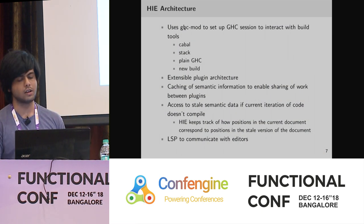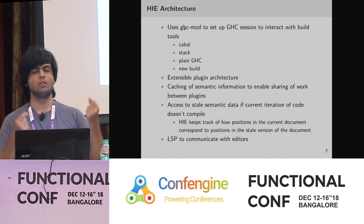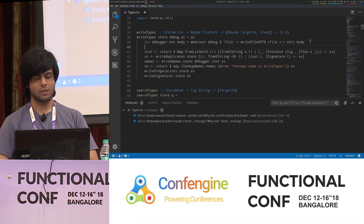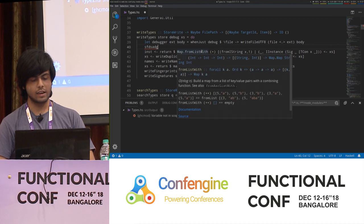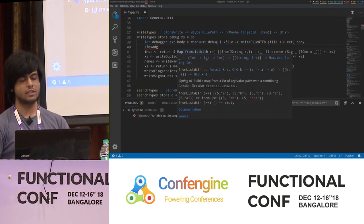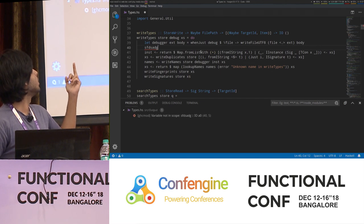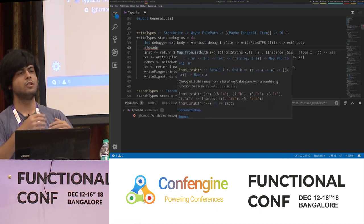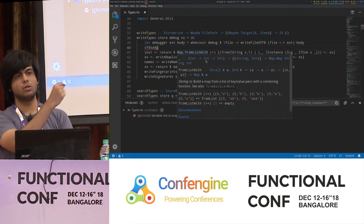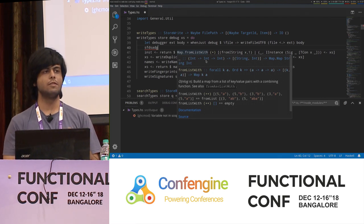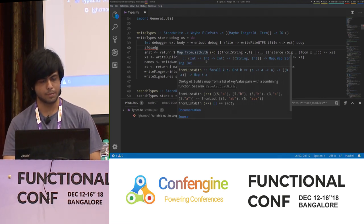It also correlates position in your new document. So if I write some gibberish here, you'll notice that even though that line shifted, I still get the correct documentation for this symbol here, because it keeps track of how the changes come in and whether this thing is actually in the old document, and how the positions correlate. It will give you information from the old version of the document that actually did compile.